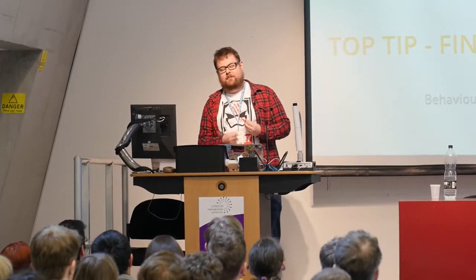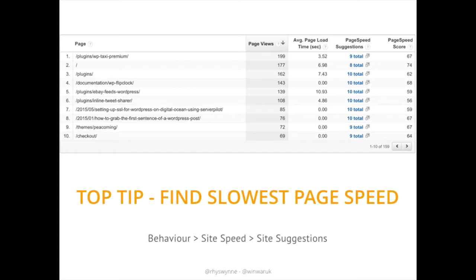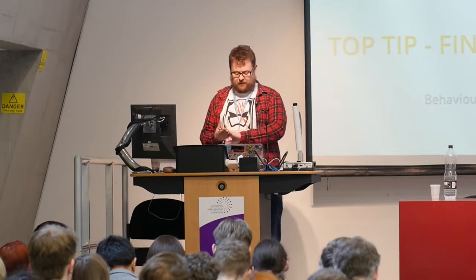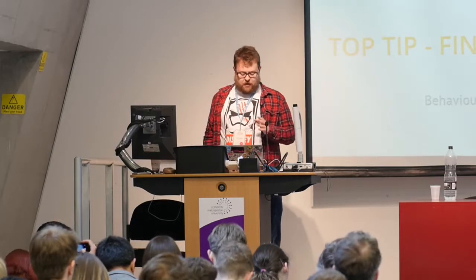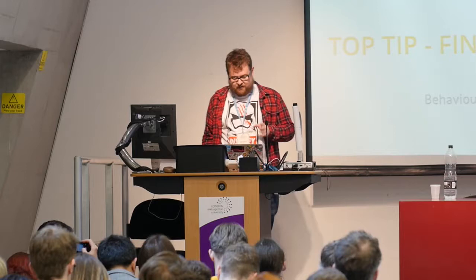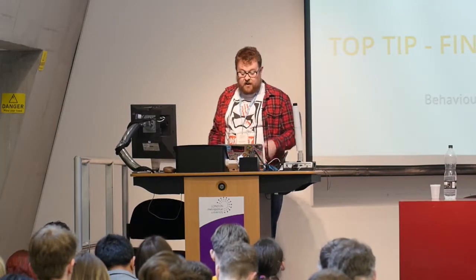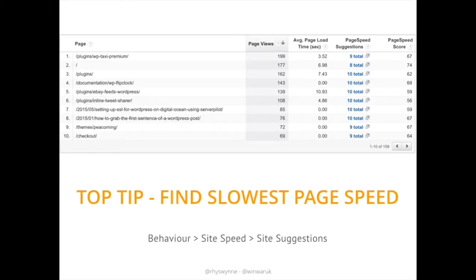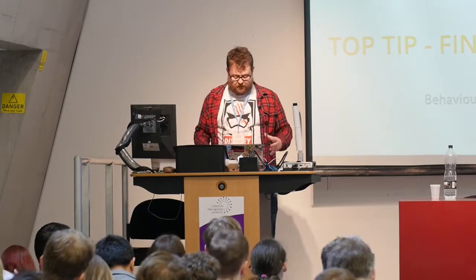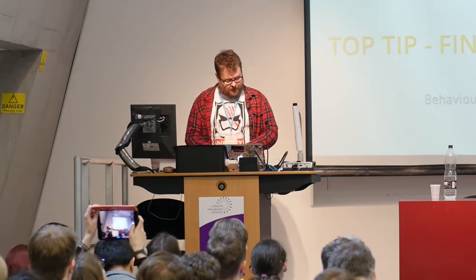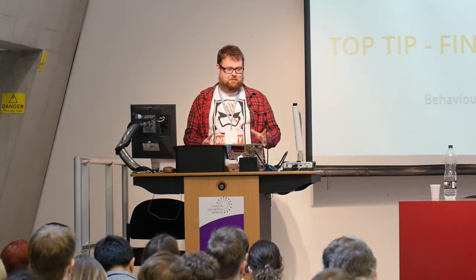When carrying out SEO projects, you generally need to prioritise work. One of the things you can do is try to speed up the site. If you go in Google Analytics and go to Behaviour, Site Speed, and Site Suggestions, you can find the slowest pages on your site. You can also find the most popular pages, so those are good pages to start prioritising. It also integrates with Google PageSpeed and offers some recommendations, though some you may not be able to implement.